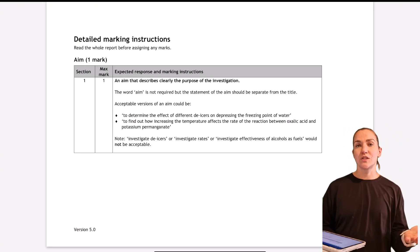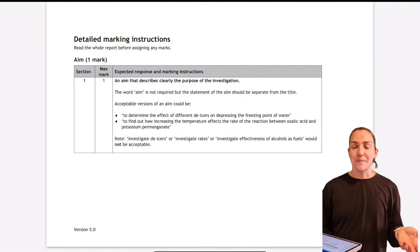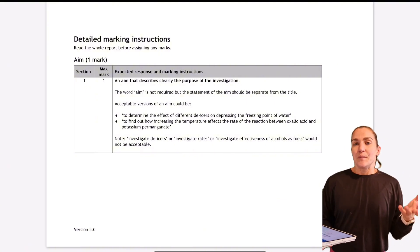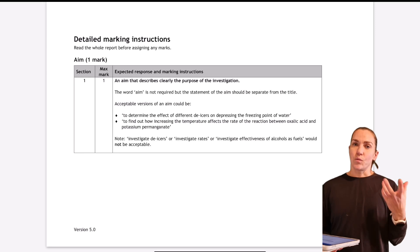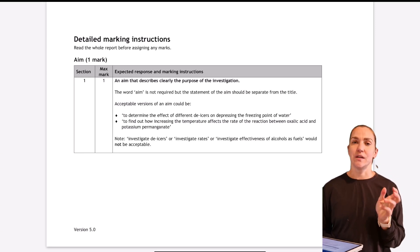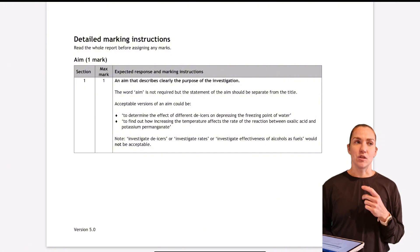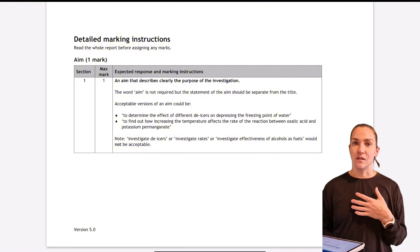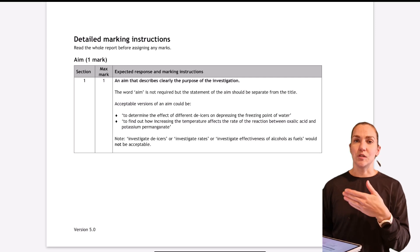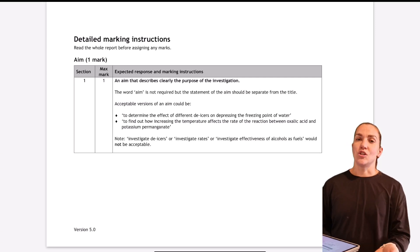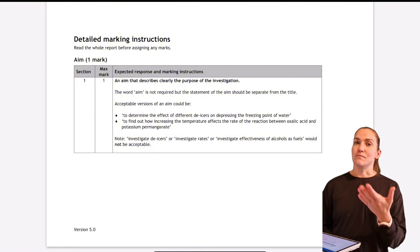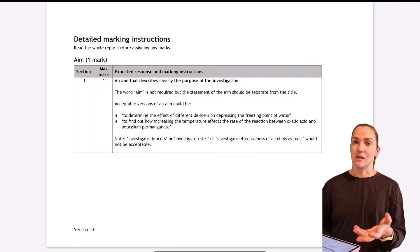The first thing is your aim. The aim is pretty straightforward — you're trying to find or determine something — but you need to make sure the words in your aim match up with what you're actually measuring. For example, if you say you're investigating the effect of concentration on the rate of reaction, then you need to be changing the concentration of a substance and actually measuring the rate — calculating the average rate.